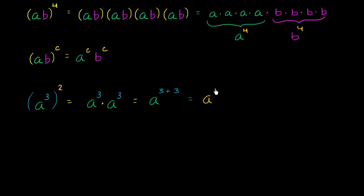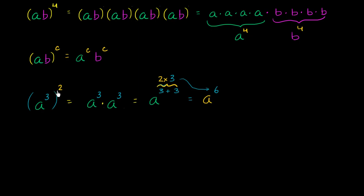So what just happened? I took two copies of a to the third and multiplied them together, so I took these two threes and added them together. This is essentially two times three, which is how we got six. When you raise something to one exponent and then raise it to another, that's equivalent to raising the base to the product of those two exponents. I encourage you to try other numbers to see how this works.